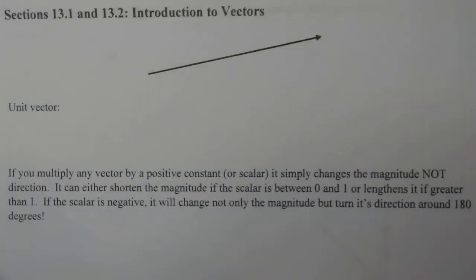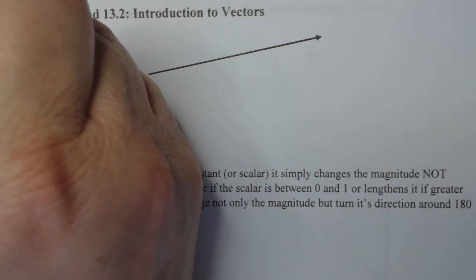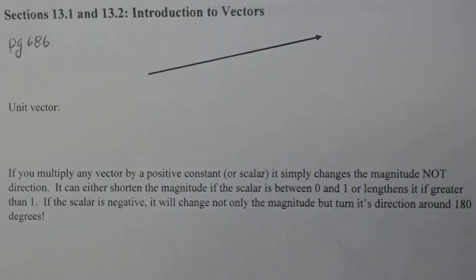This is on page 686 of the textbook. If you'd like to look it up, page 686. Okay, now this is a picture of a vector right here and let's talk about the pieces that was mentioned in the definition.